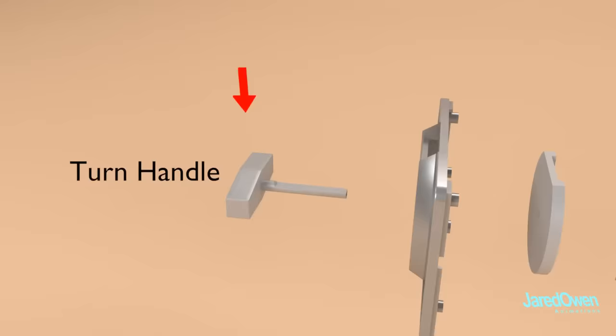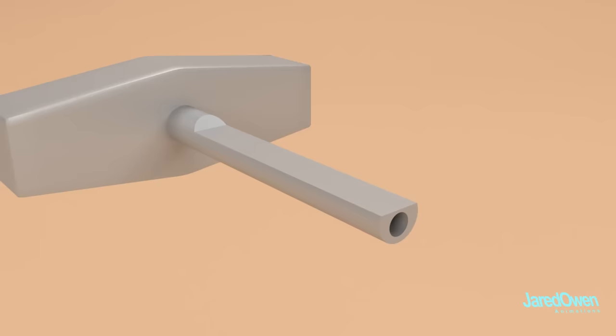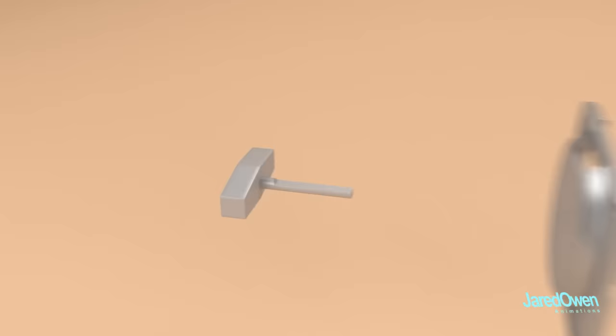The turn handle goes through all the pieces here. Notice how the rod is not a perfect cylinder. It's mostly flat on top. The coin receiving disk fits perfectly onto the flat part. When the handle turns, the disk turns with it.